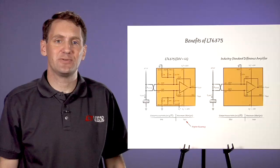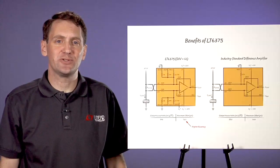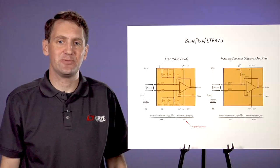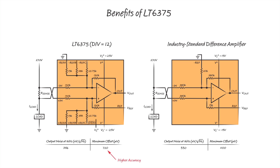Additionally, the LT-6375 has a wider supply voltage range than the industry standard difference amplifier. This allows you to use a low resistor divider ratio for a high input common mode voltage measurement. Here we can see that we can use plus and minus 25 volt supplies and a resistor divider ratio of 12 with the LT-6375, while the industry standard amplifier is on its maximum plus and minus 15 volt supplies and its fixed resistor divider ratio of 21. This allows the LT-6375 to have superior performance.